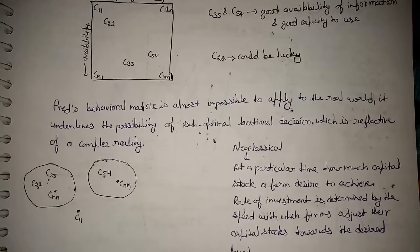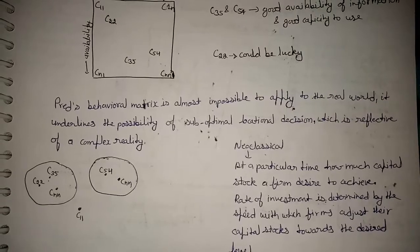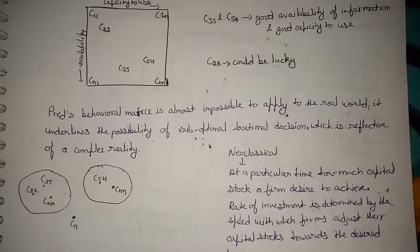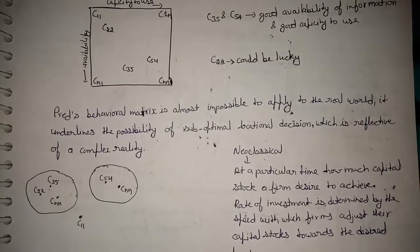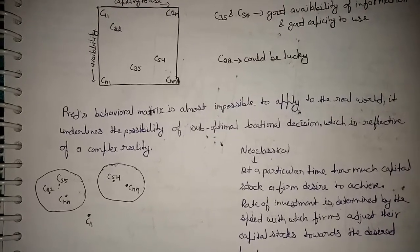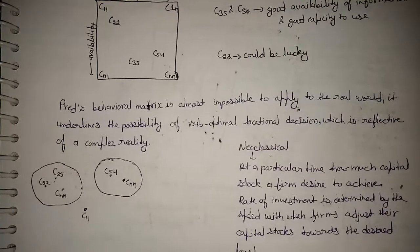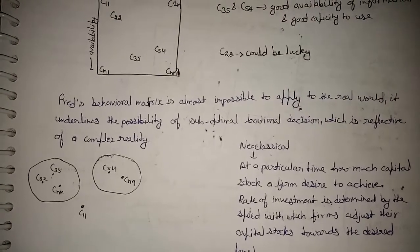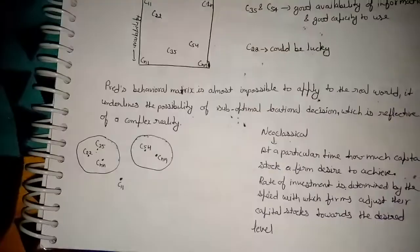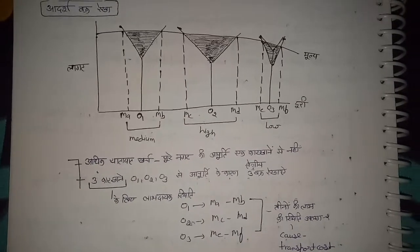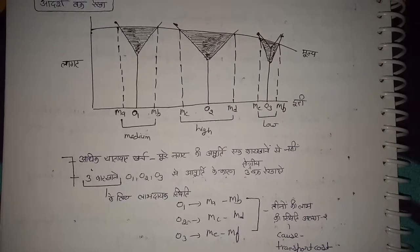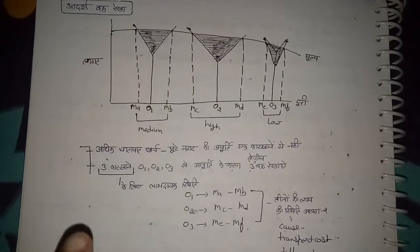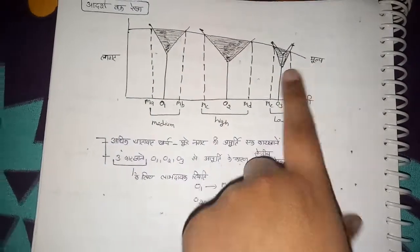Pred's behavioral matrix is impossible to apply to the real world because there are possibilities that even with less information and fewer skills, a firm can still be at a good location — like c22 could be lucky. It presents a complex reality, which is why it is sometimes almost impossible to apply in the real world. Now we will look at the optimum curve line, or 'adarsh vakar rekha,' where we have cost on one axis and value on the other.